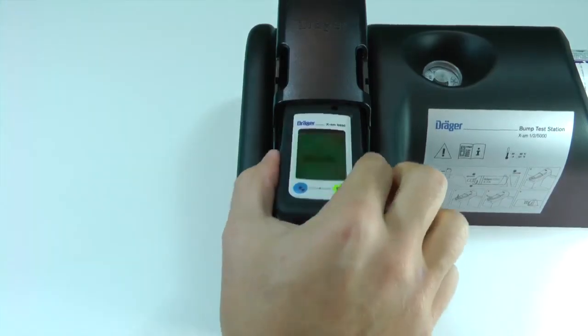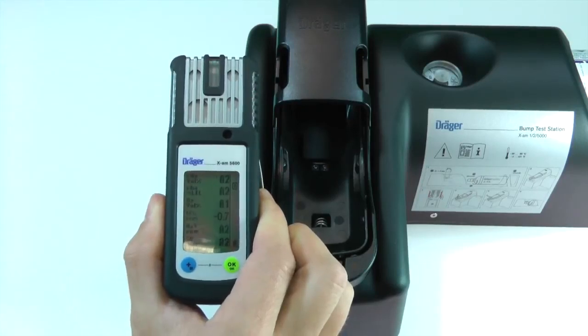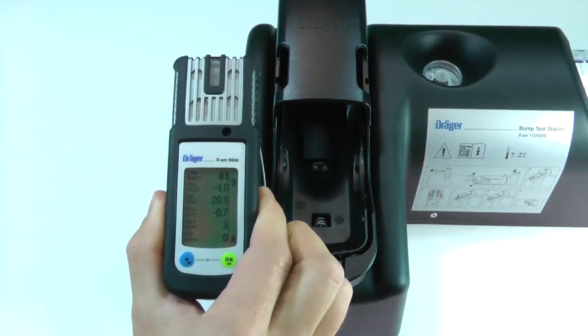Press the release button on the cradle to remove the instrument from the bump test station. You can press the OK button to acknowledge any A1 alarms that remain.